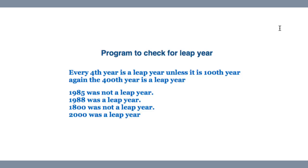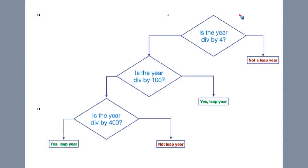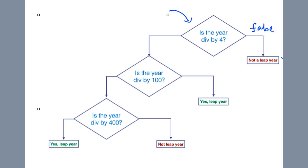Let's go through the logical flow using a flowchart to determine whether a given year is a leap year or not. The first decision is to check whether the year is divisible by four, after taking the year from the input console. If the year is not divisible by four, it falls to the false condition and we determine it is not a leap year.